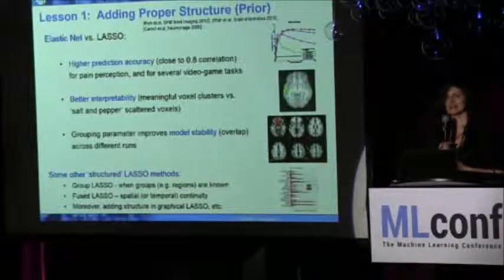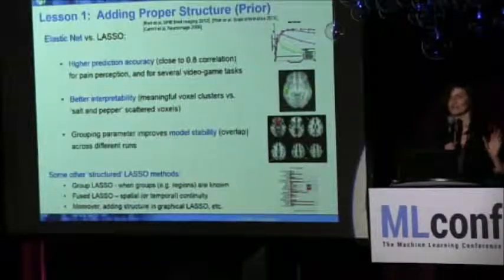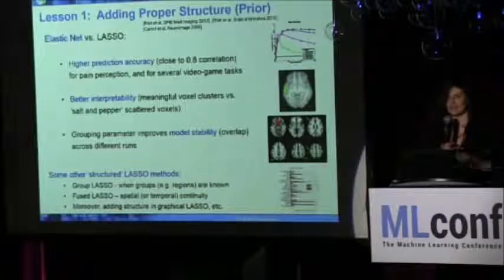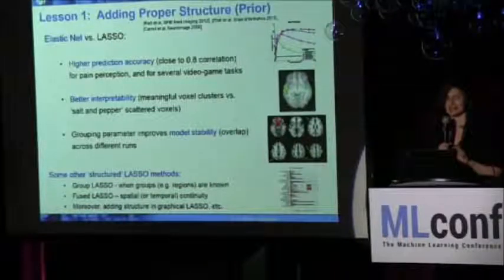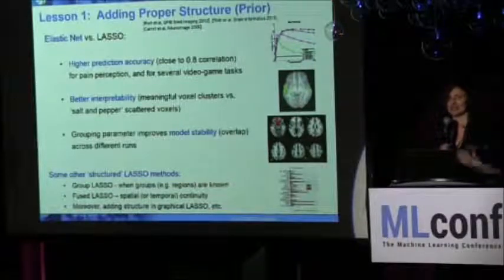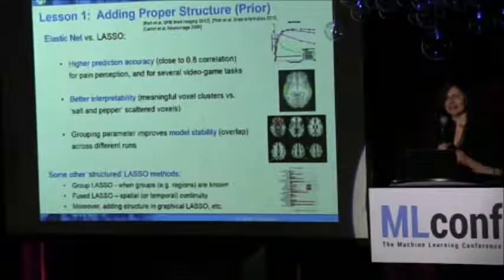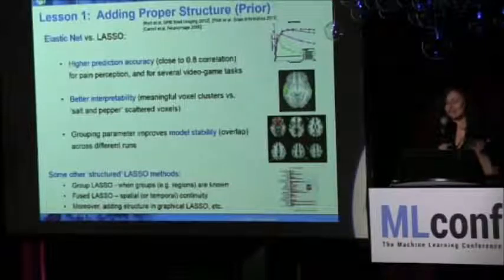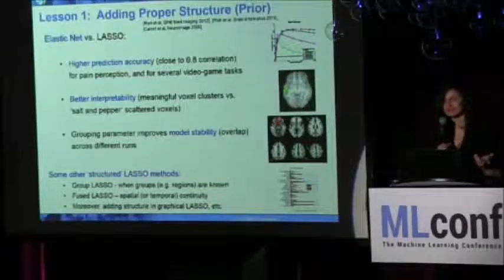This type of structure makes perfect sense in this domain. One of the lessons you learn in biological applications and brain imaging in particular is that adding proper structural prior is extremely important and you need to know what type of prior you add. With elastic net we had very good experiences — multiple applications to pain, video game playing, and other domains. Elastic net was quite accurate in predicting the task or stimulus. For example, you can get up to 0.8 correlation with true pain perception, predicting it just by looking at people's brains. Elastic net also shows you clusters of voxels that are predicted well — not salt and pepper, but actual regions in the brain — and because of the grouping it improves stability of the model.